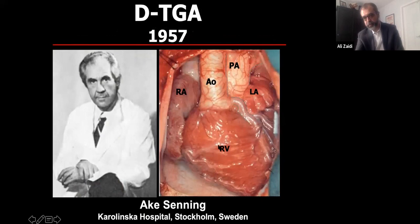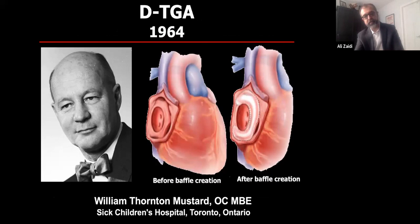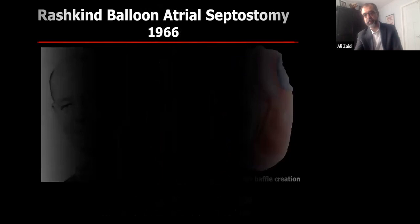In the 1950s, for transposition — right ventricle to the aorta, left ventricle to the pulmonary artery — Dr. Senning came up with the Senning operation, and in the 1960s this was developed further by Mustard. In transposition, venous blood was rerouted using an atrial switch operation: all venous caval blood goes one way and pulmonary vein blood comes the other, correcting the circulation at the atrial level. This stood the test of time.